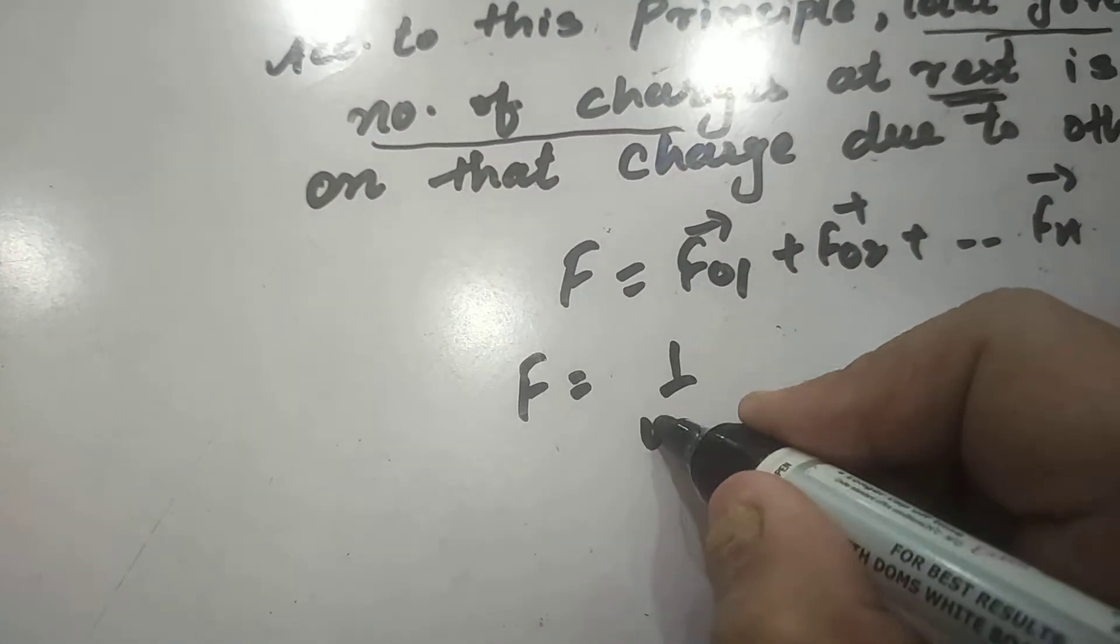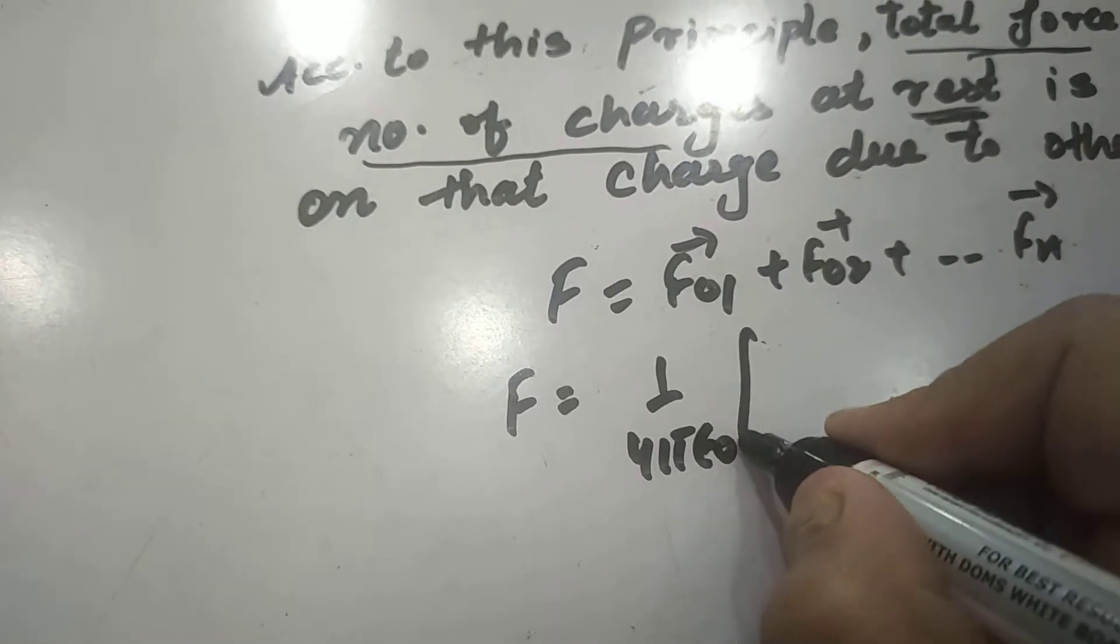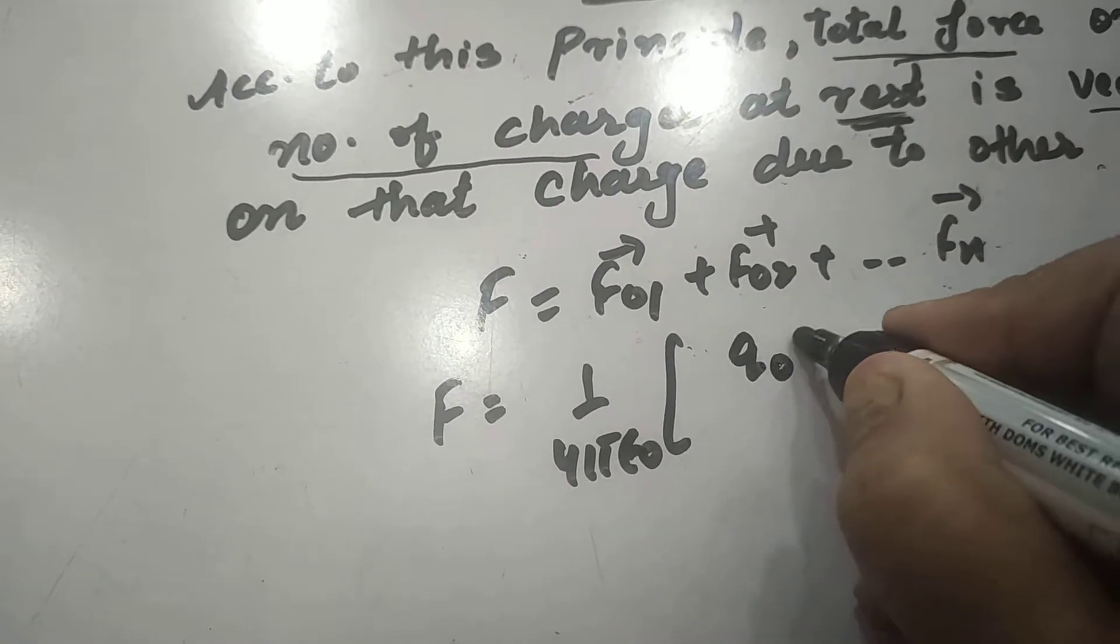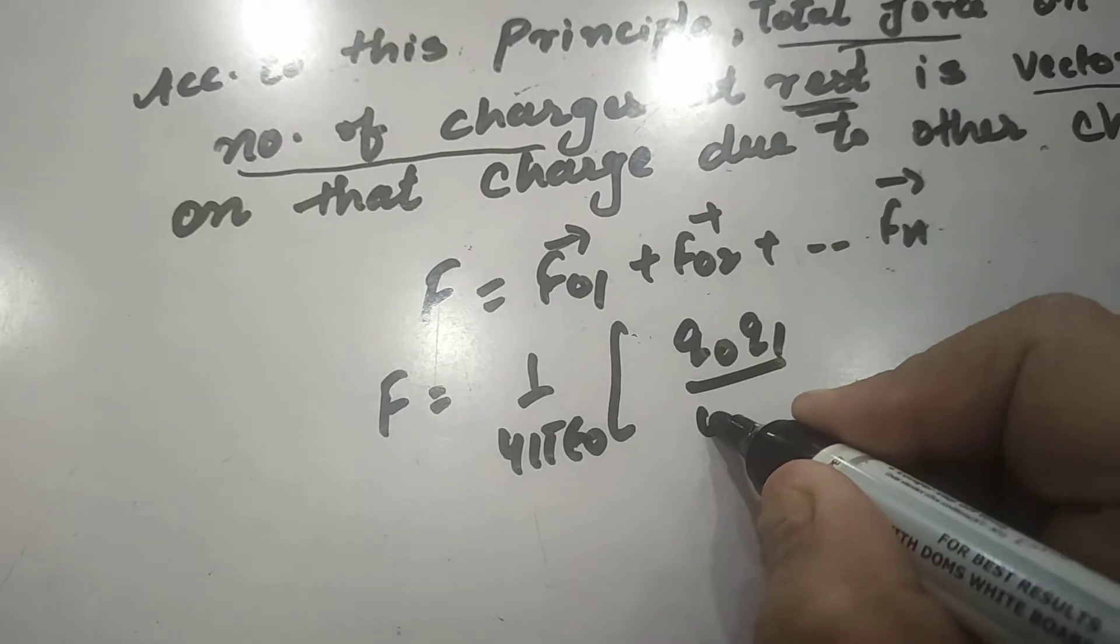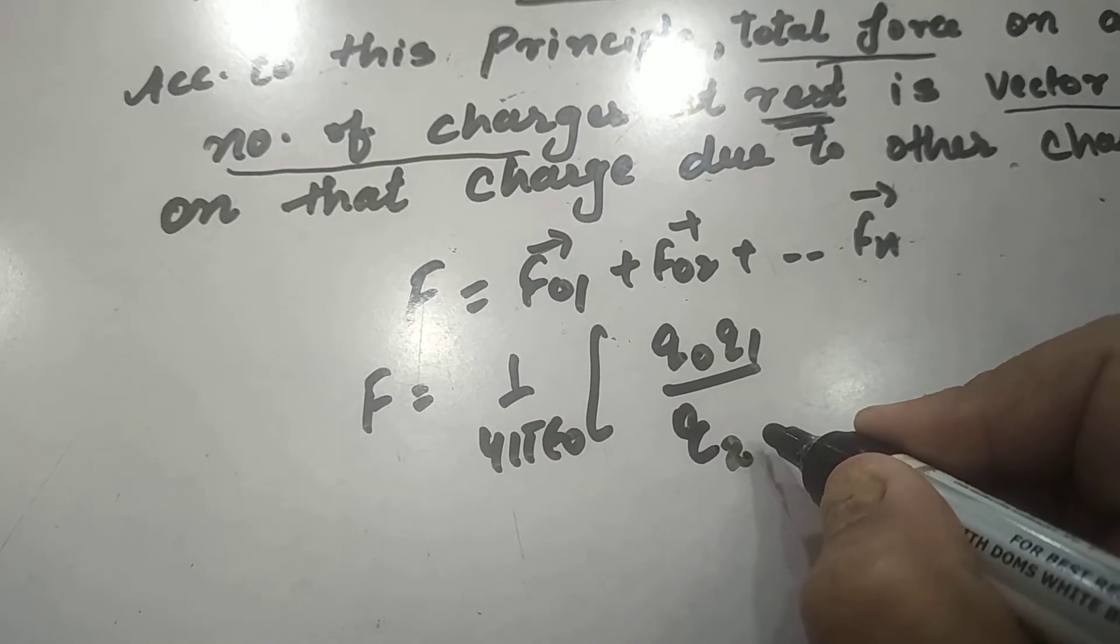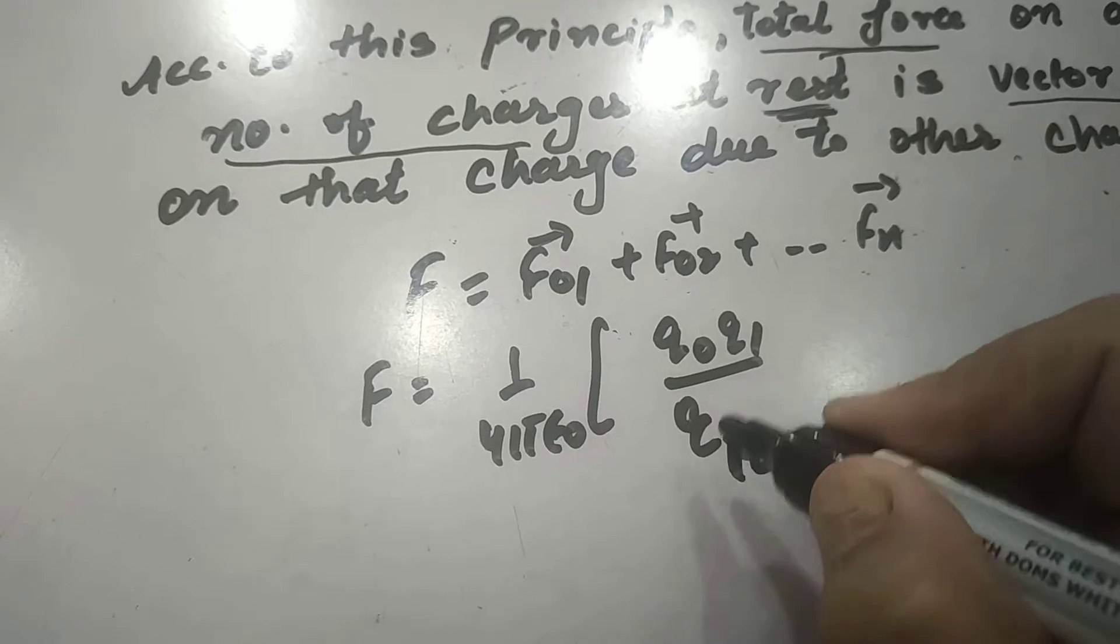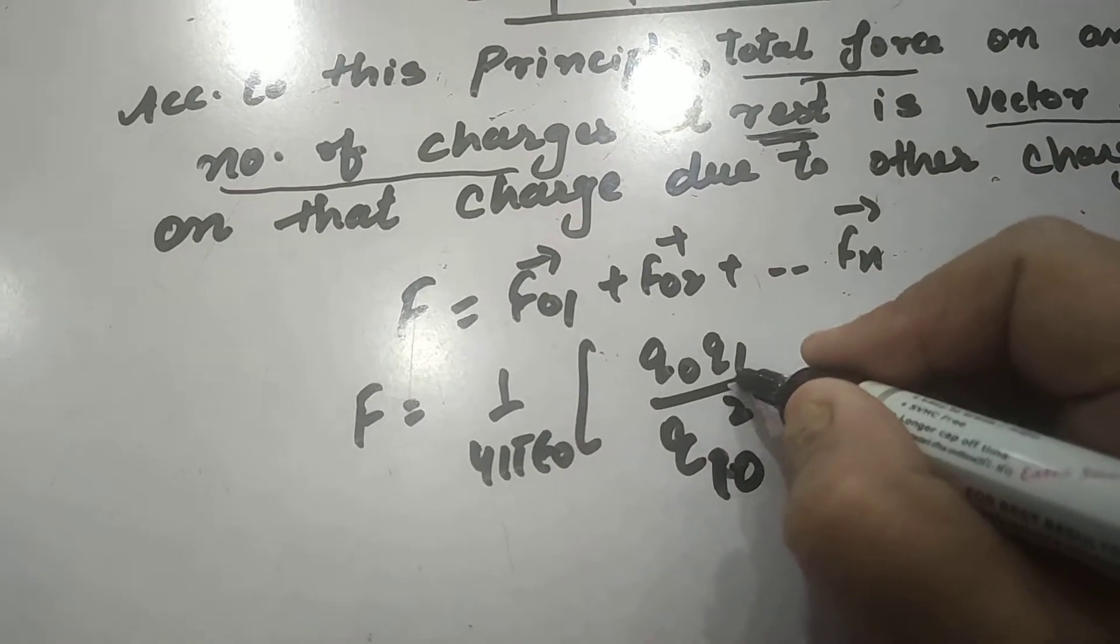Using Coulomb's law, F is equal to 1 upon 4 pi epsilon naught taken common q naught q1 upon r10 cube r10 vector, upon r2 cube r20 vector.